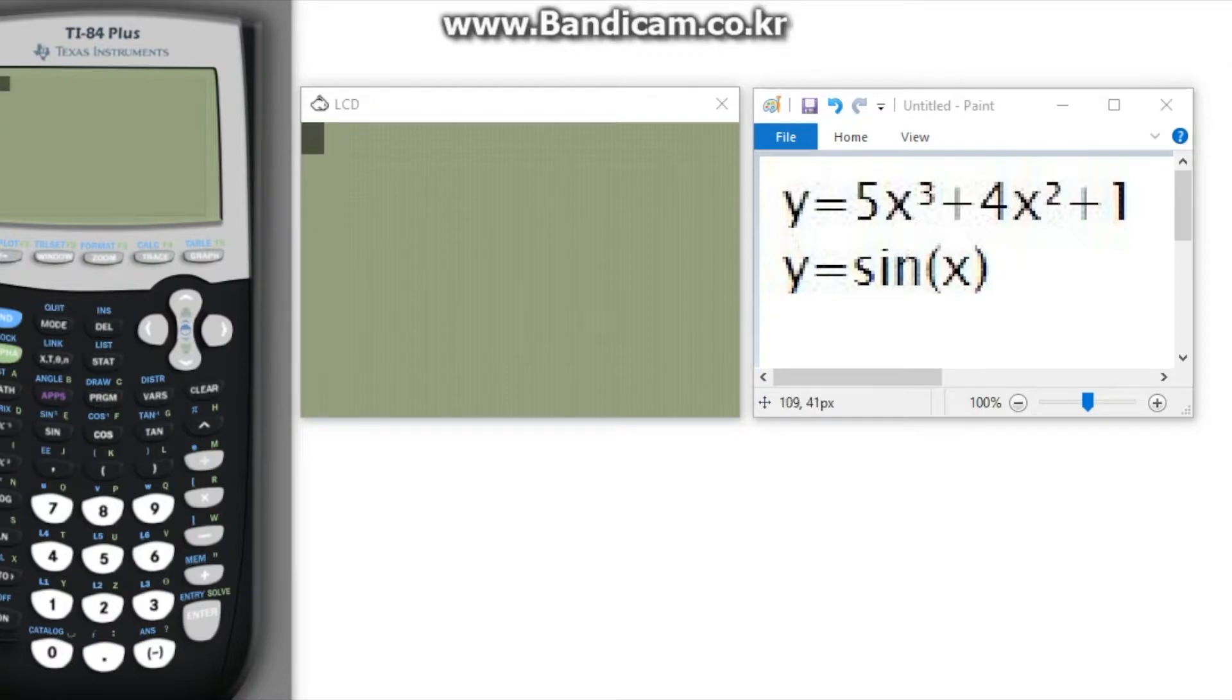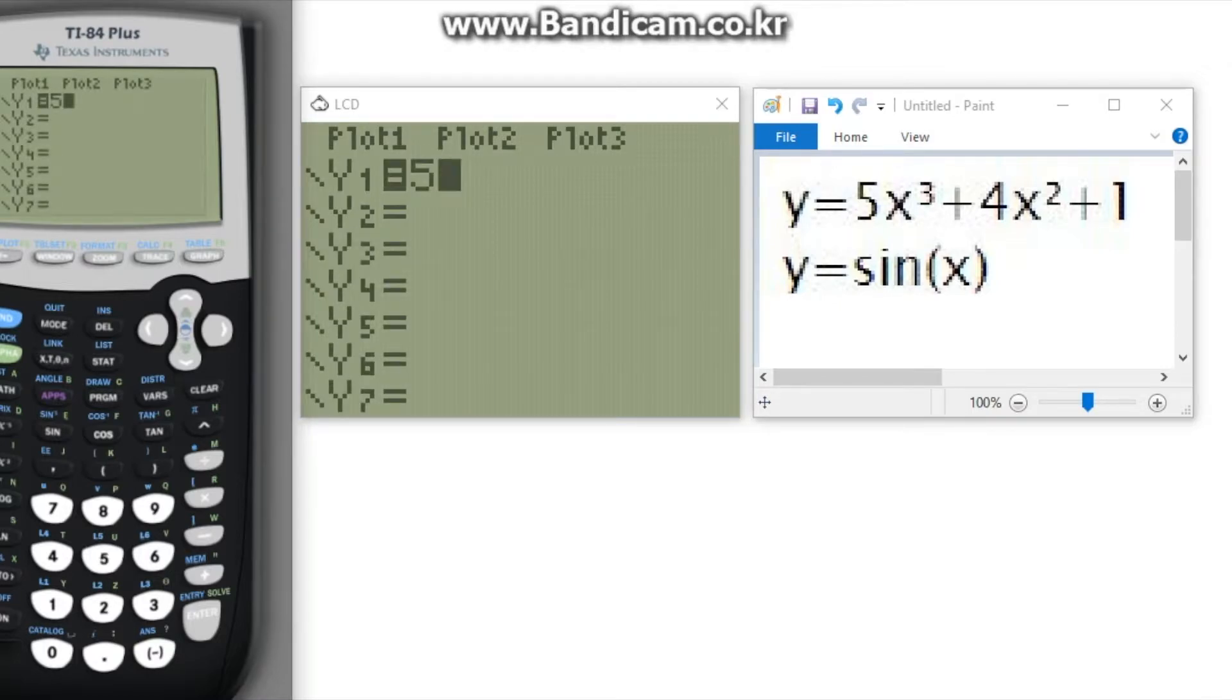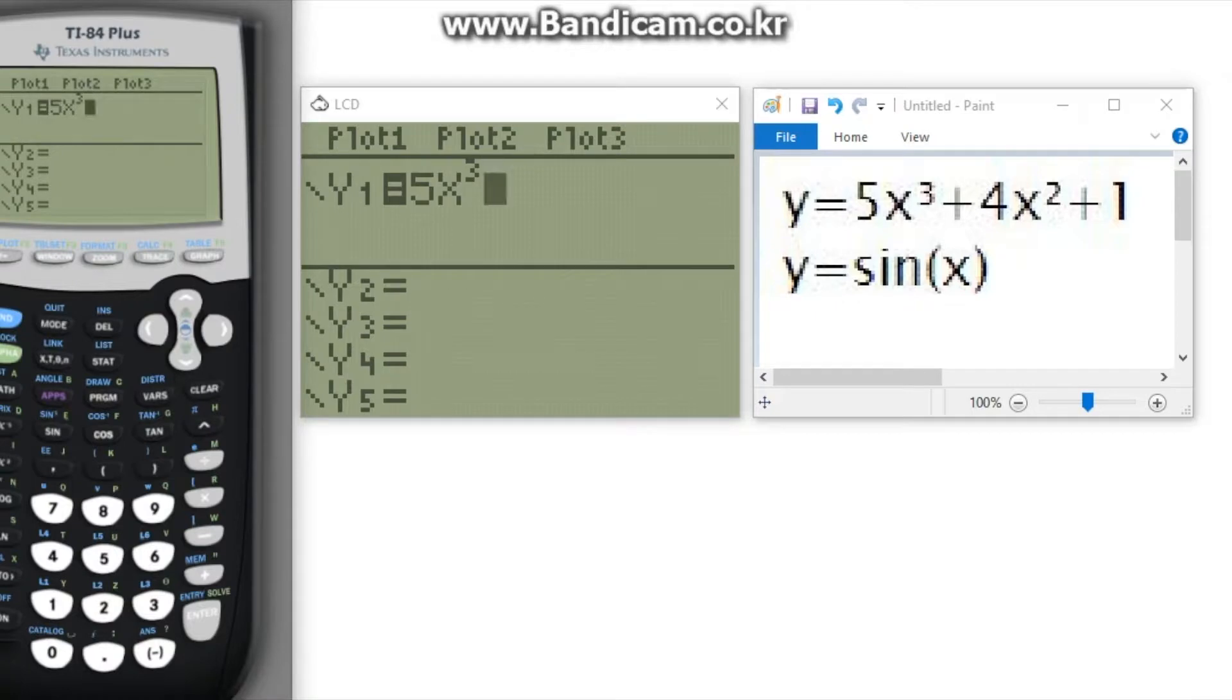Moving on to something that might look a little more complicated, we have the two equations y is equal to 5 times x to the 3rd power plus 4 times x to the 2nd power plus 1 and y is equal to sin x. Like before, we will begin by inputting both equations into the calculator and pressing the graph button.